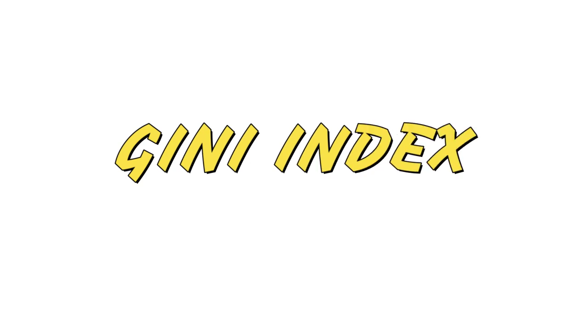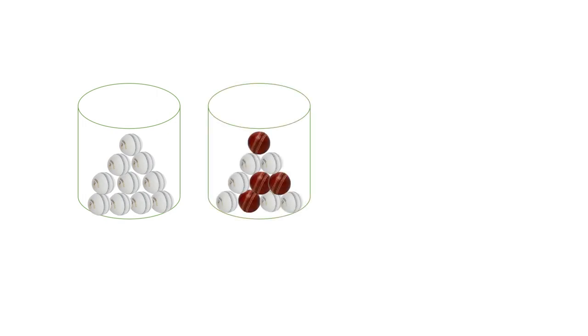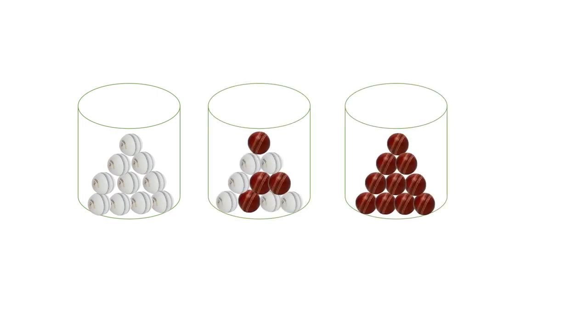To understand Gini index, let's see a simple example. Suppose I give you three bags: one bag full of white balls, one bag full of red balls, and one bag with a mix of red and white. Just by looking at the bags, can you tell which bag is pure?